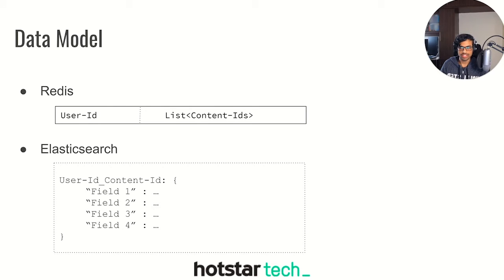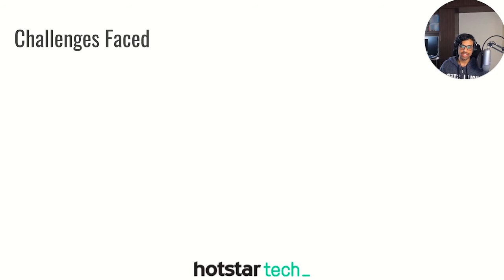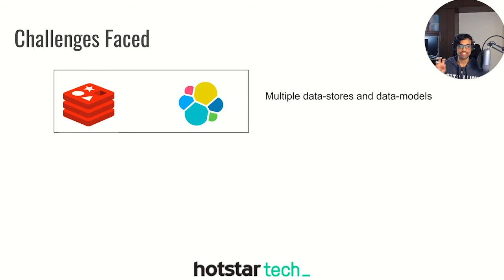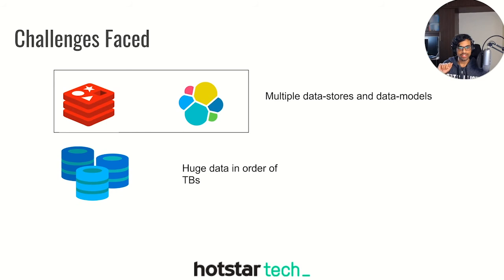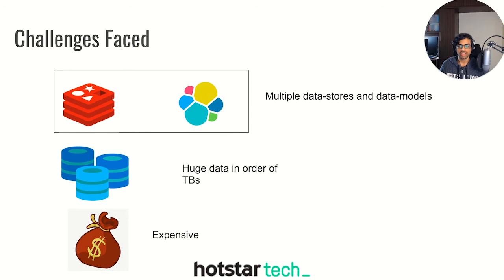The data model we followed was a user-to-list-of-content map for Redis, and Elasticsearch used a document model where for a user and content ID we stored a list of fields. Having two data stores for this led to scaling challenges. We had multiple data stores for the same use case, each with their own data model — Redis is a key-value store and Elasticsearch is a document store. We had data in the order of terabytes, and as users on the platform increased day by day, high-scale events made this difficult to maintain. The cost of maintaining two data stores at high scale ended up being expensive.